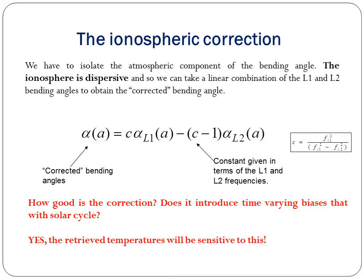For ionospheric correction, we must isolate the atmospheric component of the bending angle. The ionosphere is dispersive, so a linear combination of L1 and L2 bending angles gives the corrected bending angle: alpha_c(A) = C * alpha_L1(A) - (C-1) * alpha_L2(A), where C = f_L1² / (f_L1² - f_L2²), with f_L1 being the L1 frequency and f_L2 the L2 frequency. The question of how good this correction is — whether it introduces a time-varying bias with the solar cycle — has the answer: yes, and retrieved temperatures will be sensitive to this.